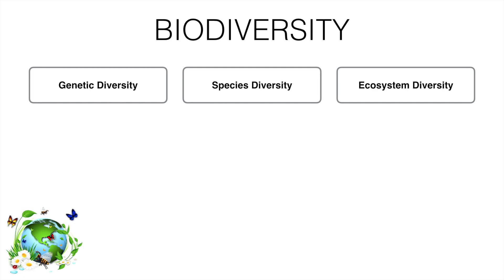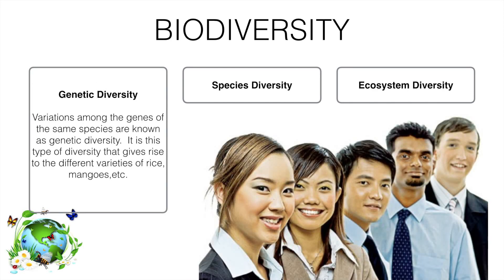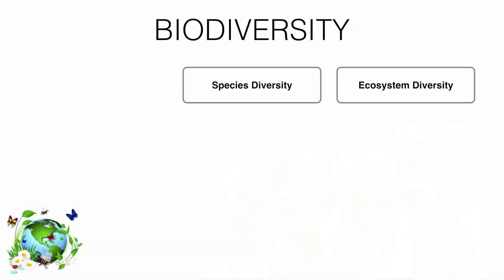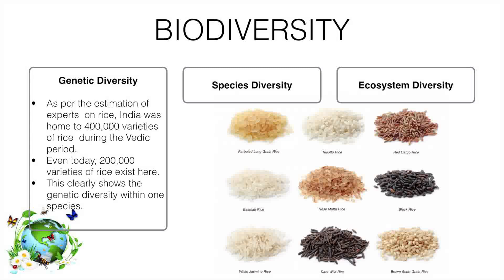What is genetic biodiversity? Variation among the genes of the same species is known as genetic diversity. If there are the same kind of species but they have different genes, then it can be considered as genetic diversity. For example, these are different varieties of rice — all of them are rice, but their genes are different, and that's why they have genetic diversity.